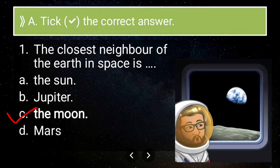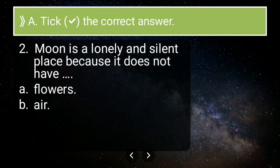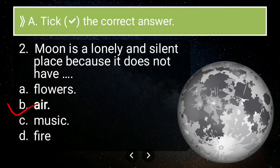Second question: the Moon is a lonely and silent place because it does not have — options are flowers, air, music, or fire. The answer is air, because sound requires a medium to travel, and the Moon does not have any air, so it is a completely silent place. You cannot hear any sounds on the Moon.